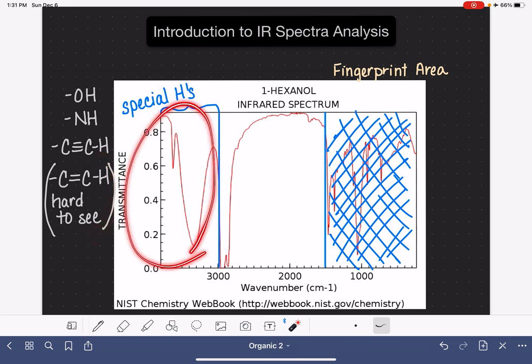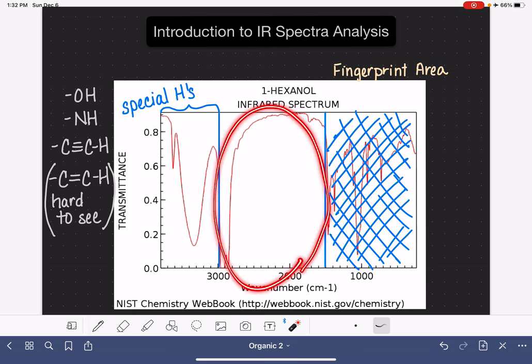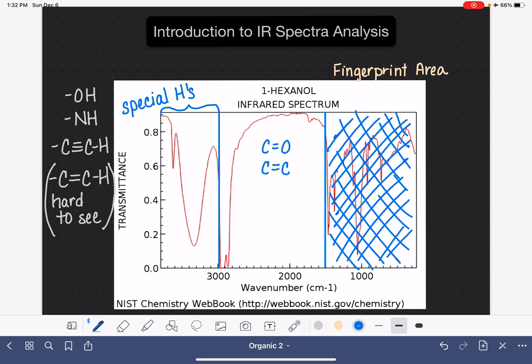So once I've analyzed the area of the special hydrogens, then we're going to turn to the area in the middle of 1500 and 3000. This is where we find our normal functional groups like the carbonyl group, the carbon-carbon double bond, the carbon-carbon triple bond, which as a reminder, you may not be able to see because it might be invisible to the IR if the molecule is symmetric. And also here we can find carbon-nitrogen triple bonds as well.